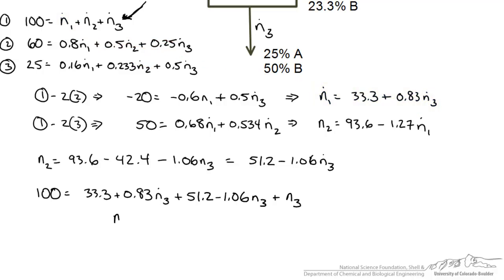Combining all this together we solve for n3, one equation, one unknown and I get n3 equaling 20.1 moles per hour.